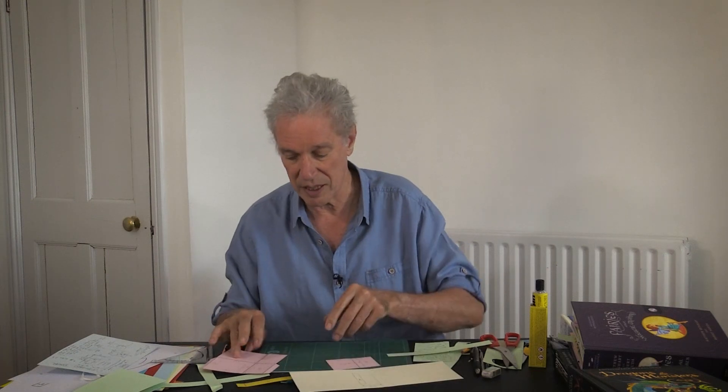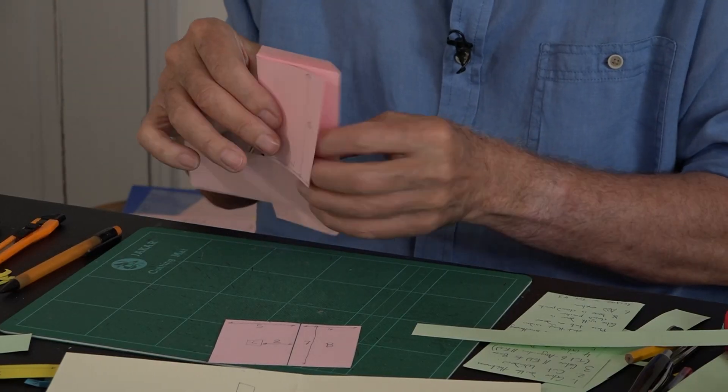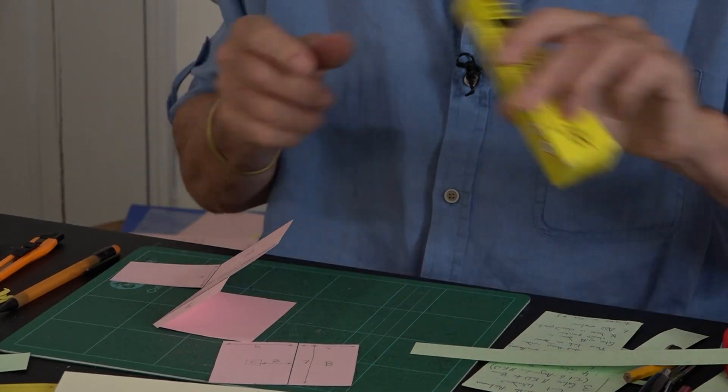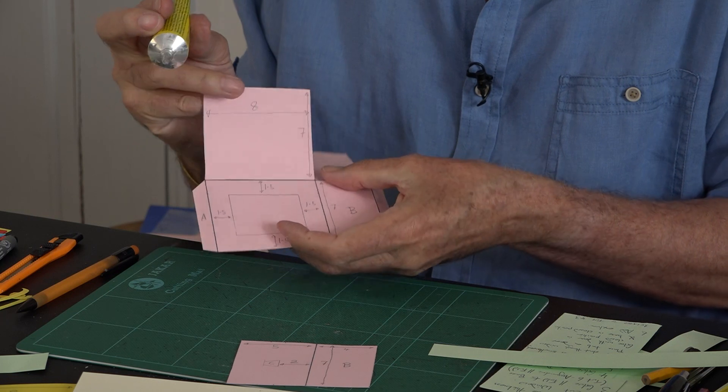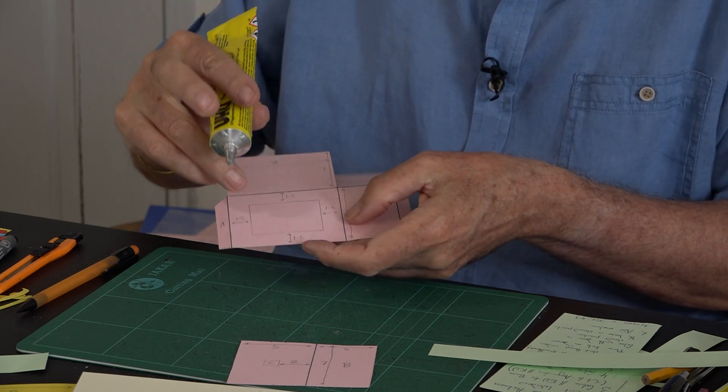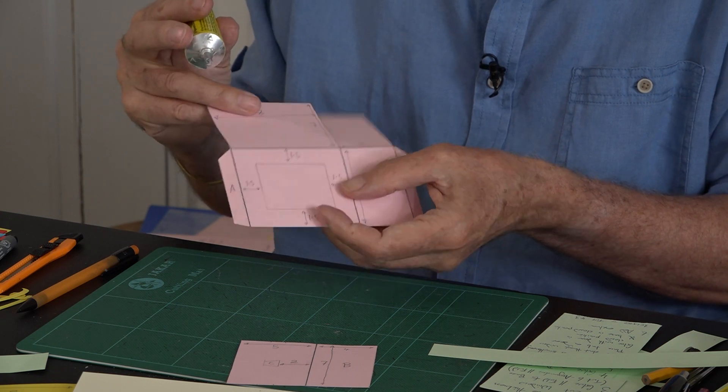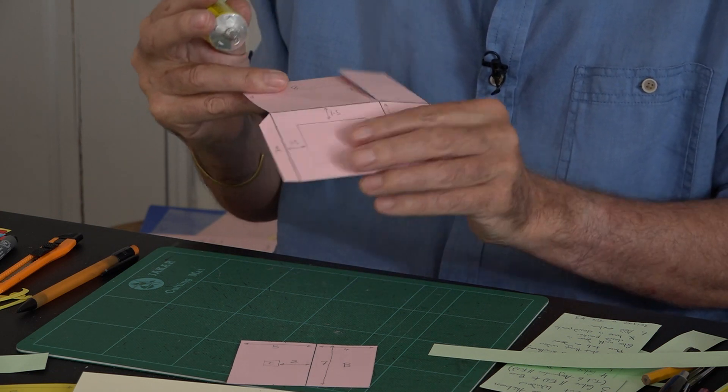I'll just start sticking them all together now. First we'll stick the main piece. I would stick it closing down so you lose all the measurements, but I actually want to keep these one and a half marks so I can cut a neat window in it, so I'm going to stick it down behind it.